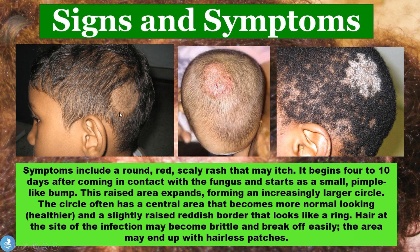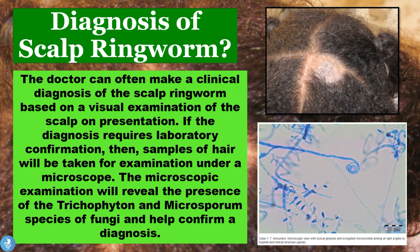For diagnosis, a doctor can often make a clinical diagnosis of scalp ringworm based on a visual examination of the scalp and presentation of the patient. If laboratory confirmation is required, samples of the hair will be taken for examination under a microscope. The microscopic examination will reveal the presence of trichophyton or microsporum species of fungi to confirm the diagnosis.